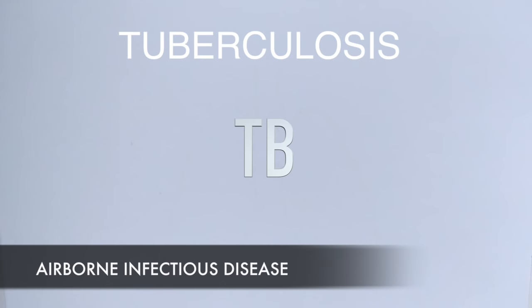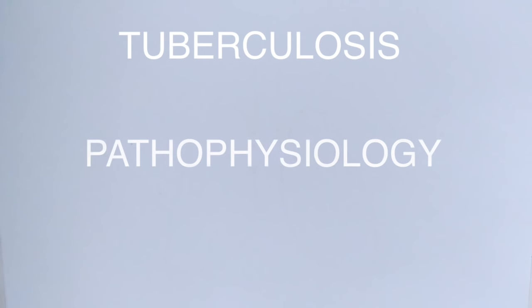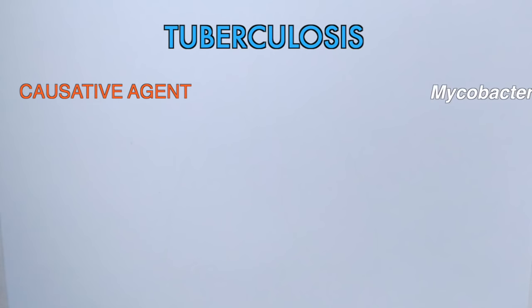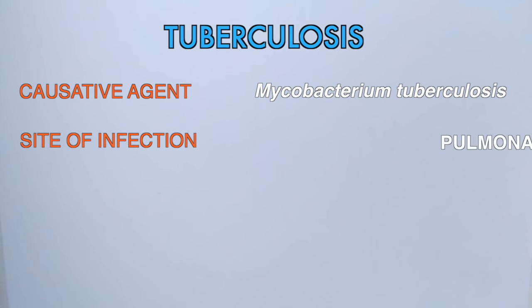Tuberculosis, commonly known as TB, is an airborne infectious disease. In this video we will be discussing tuberculosis and its pathophysiology. TB mostly affects the lung tissue, its causative agent is Mycobacterium tuberculosis, and the precise site of infection is the pulmonary alveoli of the lungs.